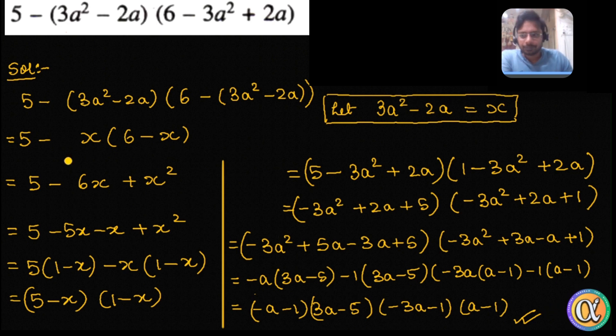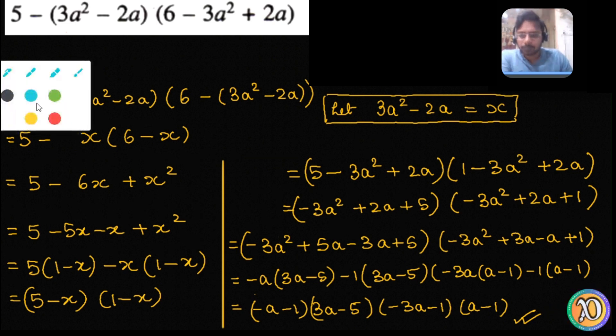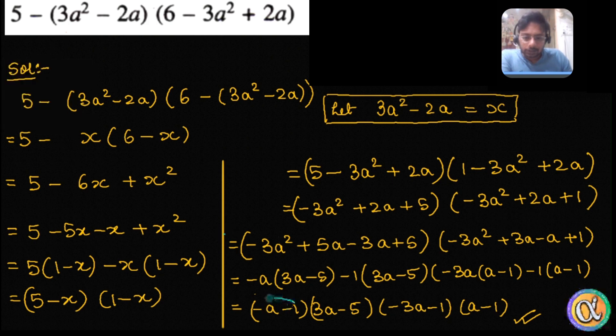You can leave your answer till here, though if you want, there's one more step which can be done. You observe this bracket, so in this bracket both the terms have minus, so I can bring this minus outside. Same thing here, both these terms have minus. And then this minus and this minus multiplies to give plus. So my final answer will become a plus 1, 3a minus 5, 3a plus 1, a minus 1.